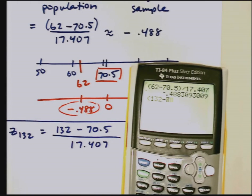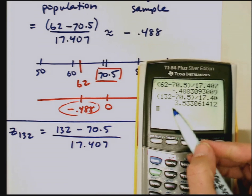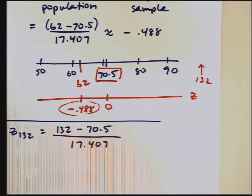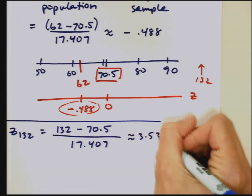If we type this in, 132 minus 70.5 divided by 17.407, we get, relatively speaking, a really big z-score, 3.533.